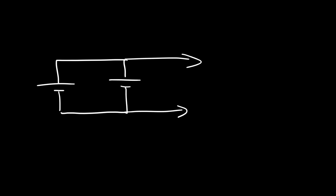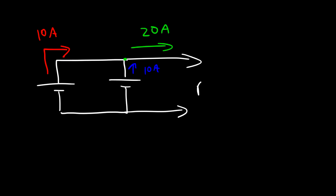Now if you connect two batteries in parallel, the current that can be delivered will be increased. If this battery delivers 10 amps of current and this one can also deliver 10 amps, at this junction the total current will be 20 amps. So whenever you connect batteries in parallel, you can increase the current they can deliver. If you connect batteries in series, you can increase the voltage.